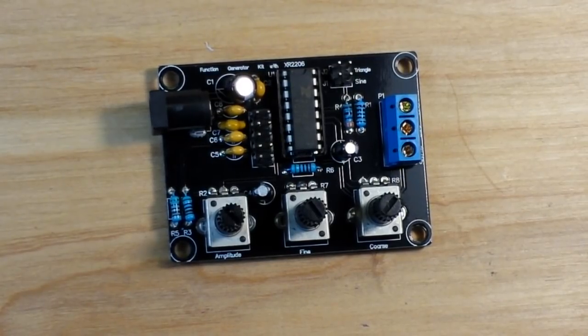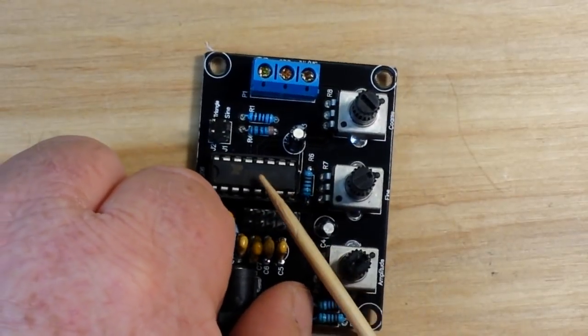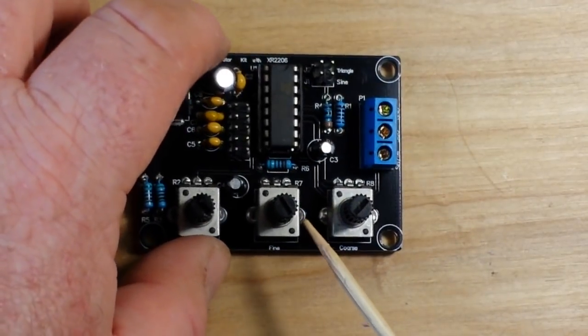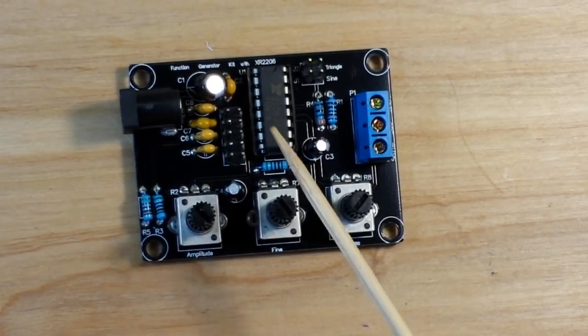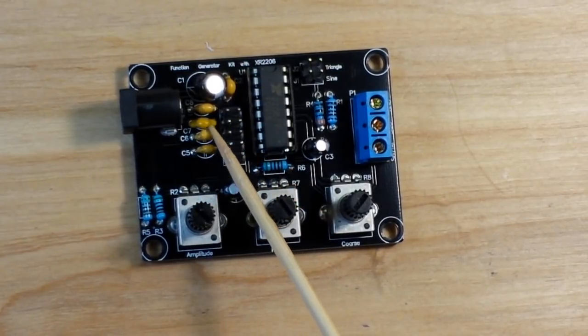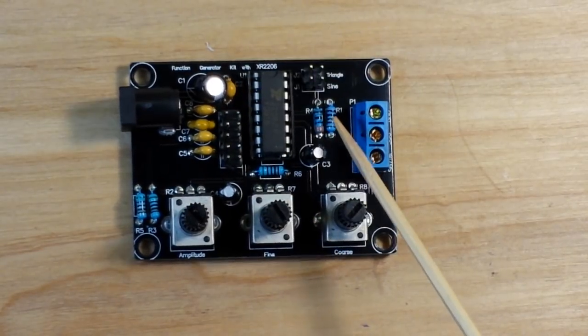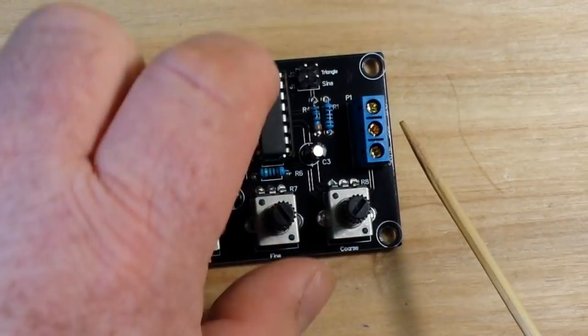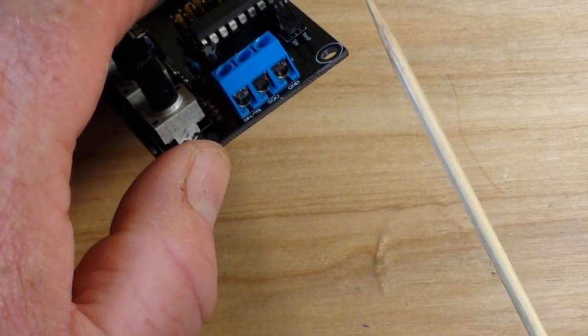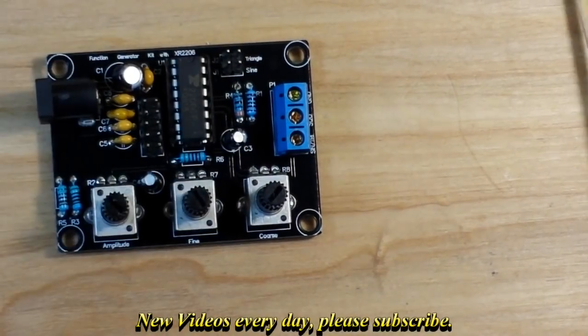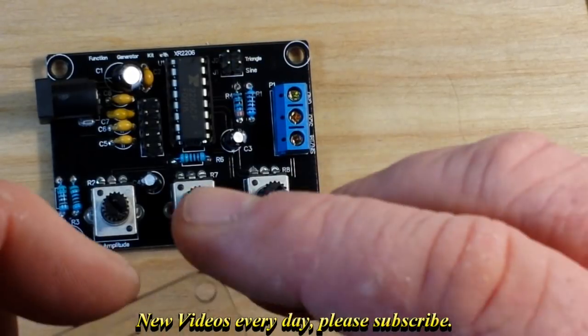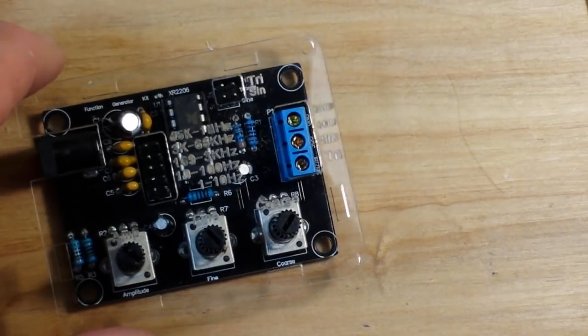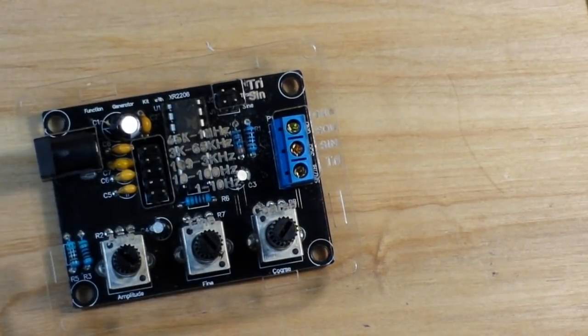Here's the board. We've got the main processor, the XR 2206 by XR Corporation, three pots for coarse, fine, and amplitude, five multi-layer ceramic dip capacitors, two electrolytics, a DC barrel jack for power input, and a three-gang terminal strip for output. They've laser etched the top case, so that's pretty sweet.